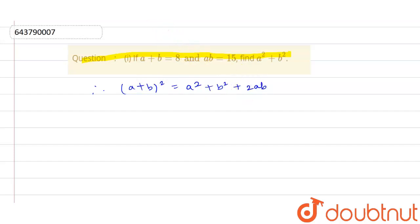So now by putting values we get our answer. So we get that a plus b is equals to 8. So 8 whole square is equals to a square plus b square.